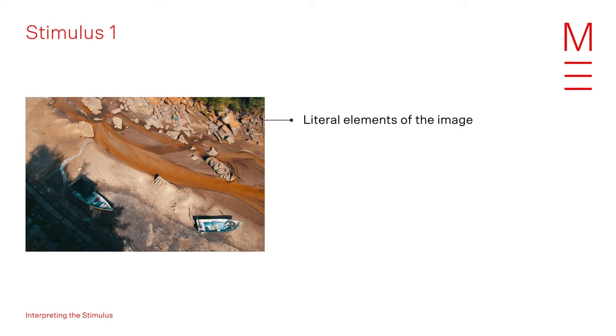We can incorporate these literal elements of the image into a story — for example, a story set in a rural fishing town whose community relies on water for its economy. This story could also play with form as a series of episodes of the same drought situation, with each paragraph from the perspective of different members of the community.